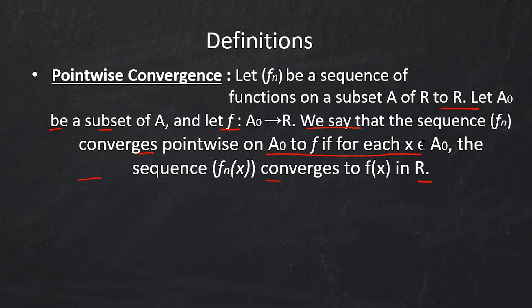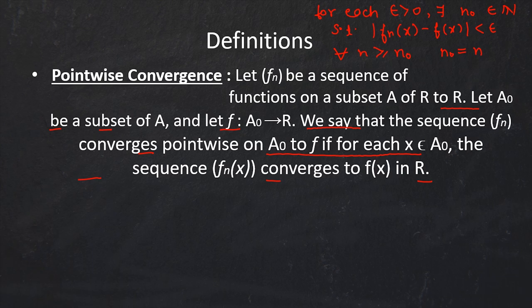This is simple convergence of a sequence, which we have done in the real analysis course already. The definition of convergence: for each epsilon greater than 0 there exists N₀ in natural numbers such that |fn(x) − f(x)| < epsilon for every n greater than or equal to N₀. Here, in pointwise convergence, this N₀ is dependent on x as well as on epsilon — that is, it depends on the point chosen and on epsilon.